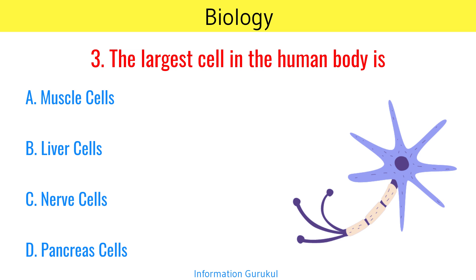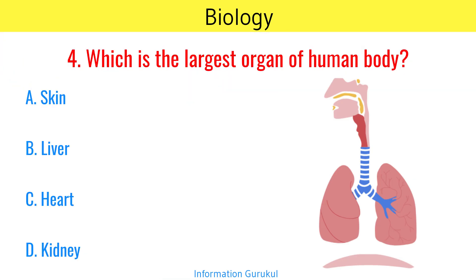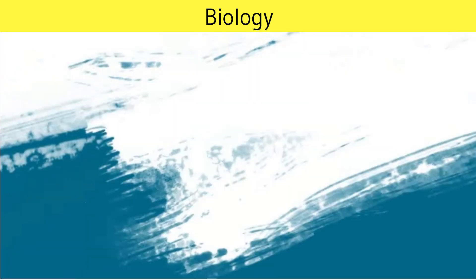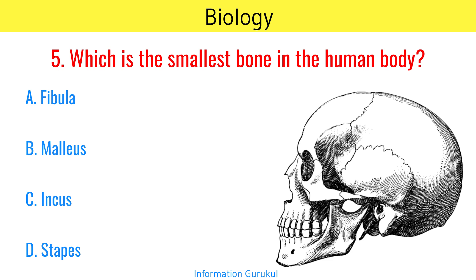The largest cell in the human body is Nerve Cells. Which is the largest organ of human body? Skin. Which is the smallest bone in the human body? Stapes.